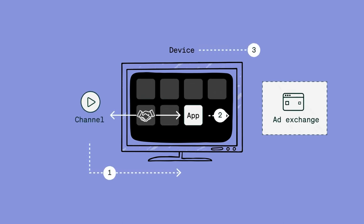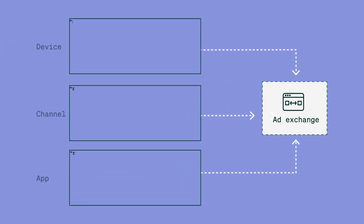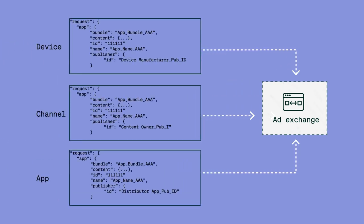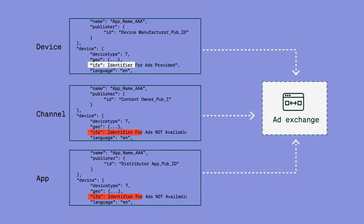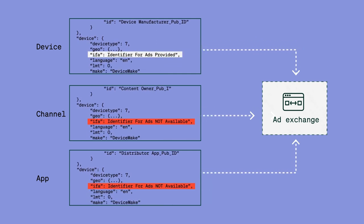However, carriage agreements and programmatic streaming may include restrictions around what digital signals, such as identifiers or content data, distributors may or may not share within an opportunity. For example, a device manufacturer may restrict app owners from using addressable identifiers, such as the device's IP address or the identifier for advertising, known as IFA, even when the consumer consented for such information to be used. Without these identifiers, buyers may not be able to optimize for the audience they want to reach.